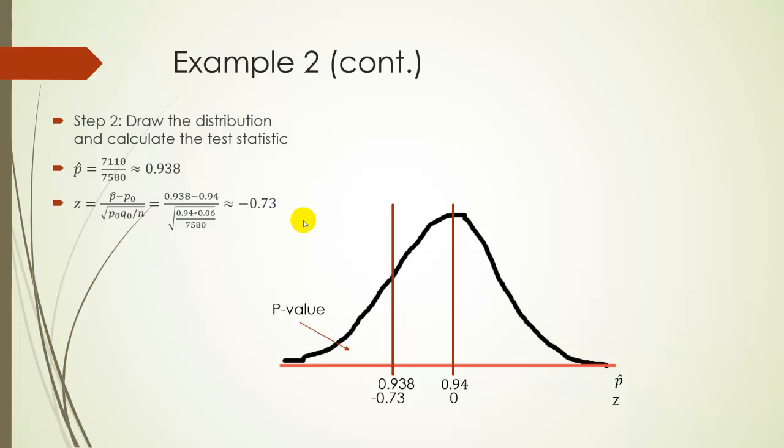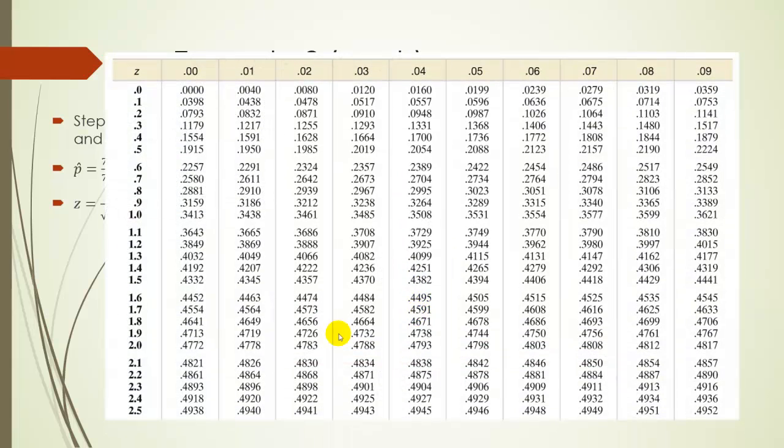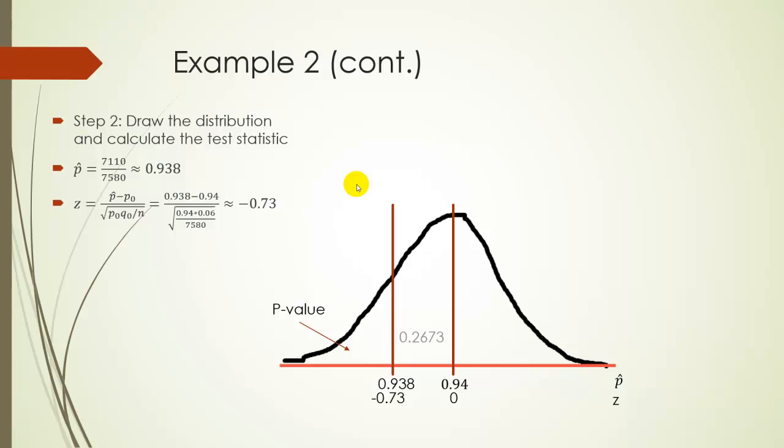We can calculate this on the table. And remember the table gives you between 0 and Z. So going to our table, we're just going to look up 0.73. So 0.7, go over to 3, gives you 0.2673. So writing that in would be right over there, and our P value is going to be 0.5 minus that. So that's 0.2327.